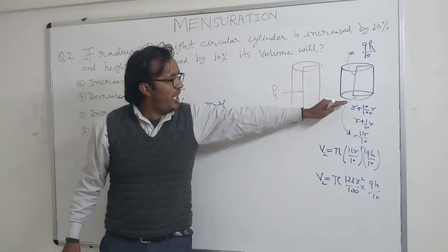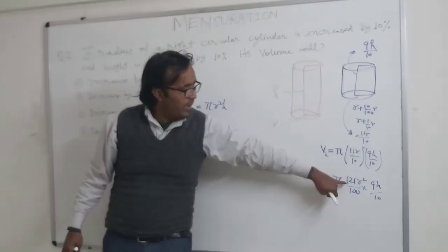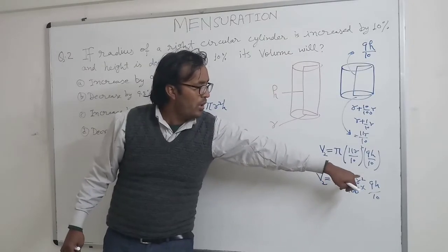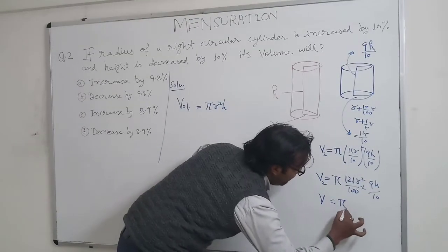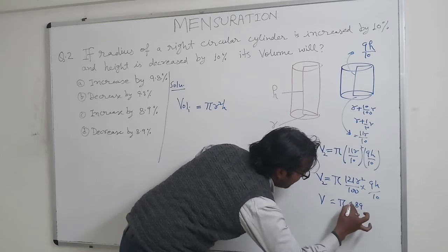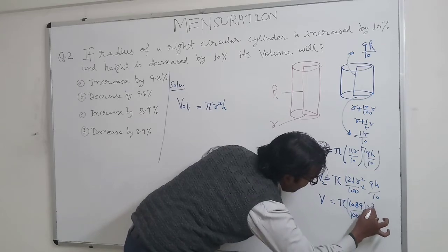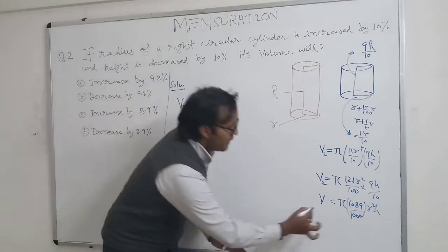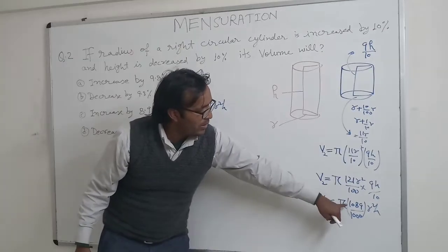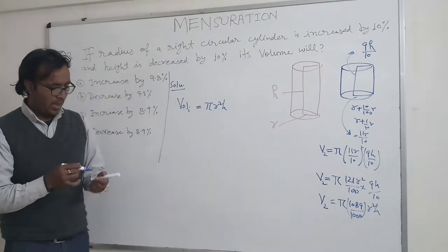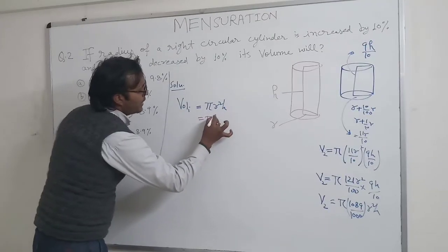So the volume of the modified cylinder, with all dimensions changed, becomes V2 = π × (121/100) × R² × (9H/10), which simplifies to V2 = π × (1089/1000) × R²H.